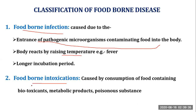In the case of foodborne intoxication, it is caused by consumption of food containing different types of toxicants, metabolic byproducts, or poisonous substances. Whenever any person ingests such food, we call it foodborne intoxication. For example, Clostridium botulinum is a spore-forming bacteria, and it produces botulinum toxin. If that toxin is present in food and is ingested by anyone, then it's called foodborne intoxication. It is very dangerous and anyone can even die if not treated properly.